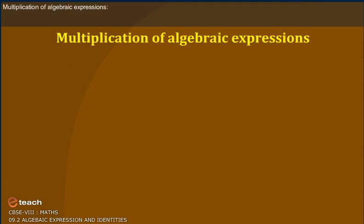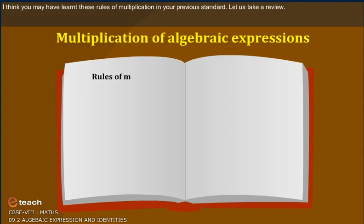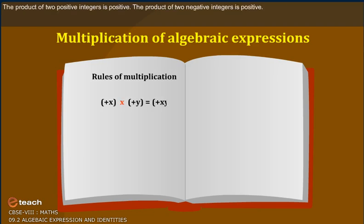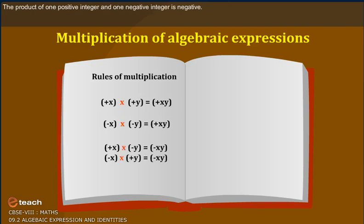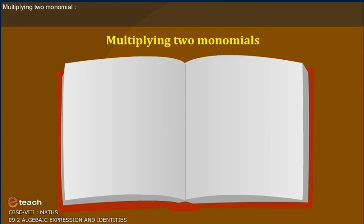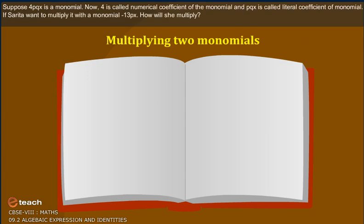Multiplication of Algebraic Expressions. You may have learned these rules of multiplication in your previous standard, so let us take a review. The product of two positive integers is positive. The product of two negative integers is positive. The product of one positive integer and one negative integer is negative.